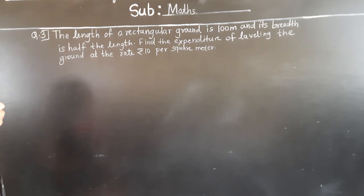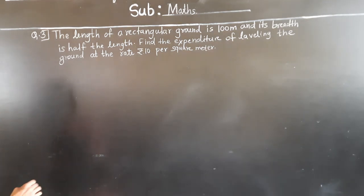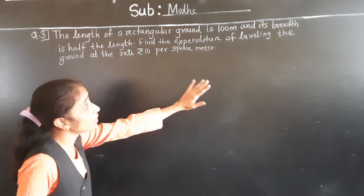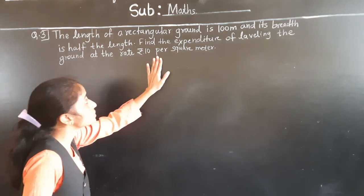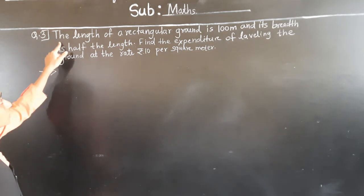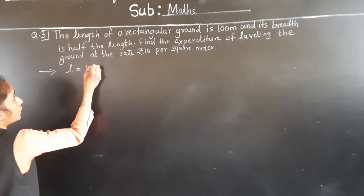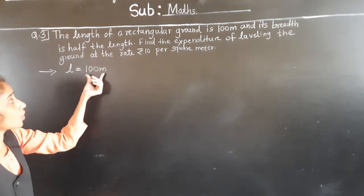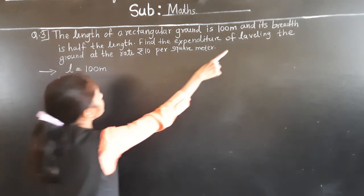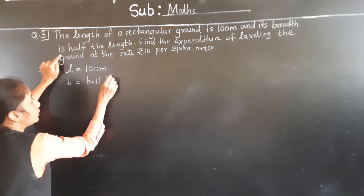Question number 3. The length of a rectangular ground is 100 meters and its breadth is half the length. Find the expenditure of leveling the ground at the rate of rupees 10 per square meter. What is given? Length of rectangular ground is 100 meters, and its breadth is half the length.